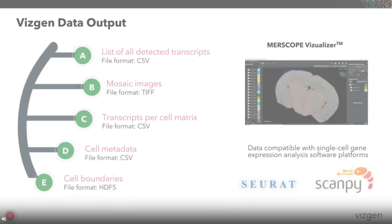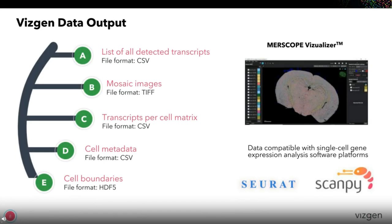There are five different data outputs coming out of MERSCOPE analysis. The first is the list of all detected transcripts, which contains gene counts and X, Y, Z coordinates. The second is mosaic images, which contains DAPI and total mRNA staining as well as protein staining images in TIF format. The third, transcripts per cell metrics, is a format very similar to single cell RNA-seq data output, containing gene and cell metrics. Finally, we provide cell metadata containing X, Y coordinates and the polygon shape of cell boundaries in HDF5 format.